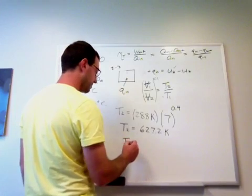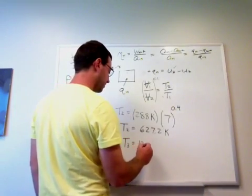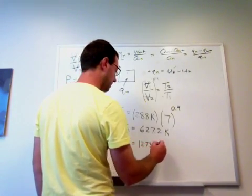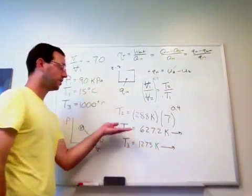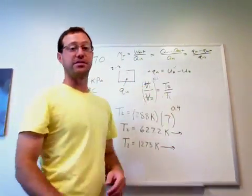T3. We said it's 1,000 degrees C, so that's 1273 Kelvin. So now we can go to table A17. Look up U2, U3. That'll give us Q.